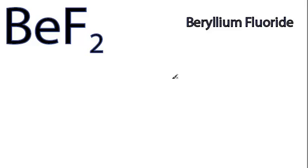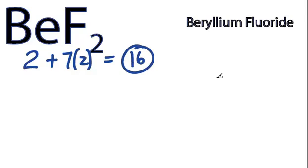Hi, this is Dr. B. Let's do the Lewis structure for BeF2. On the periodic table, beryllium is in group two with two valence electrons. Fluorine has seven, but we have two fluorines for a total of 16 valence electrons.